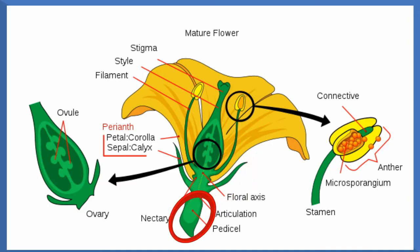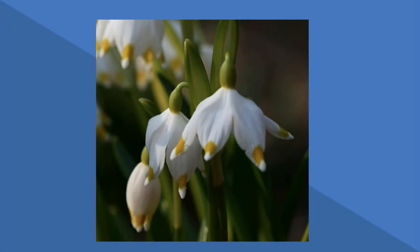The peduncle is the stem or stalk of a flower. The receptacle is the thick part at the bottom of the flower and holds many of its major organs.